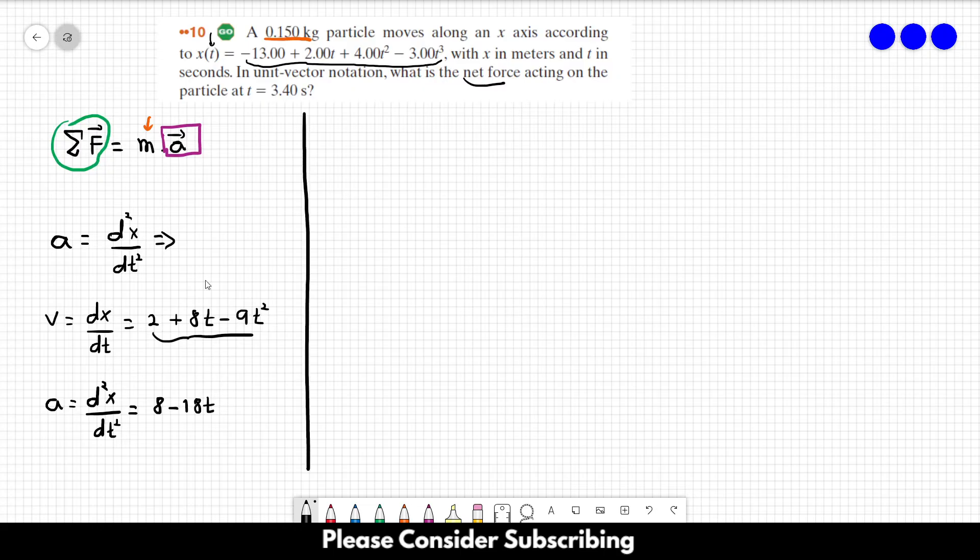We can find the net force by finding the acceleration at this time. The acceleration when t = 3.4 equals 8 - 18 × 3.4.